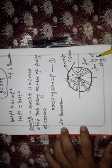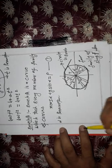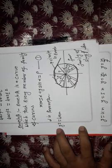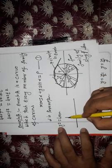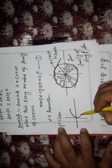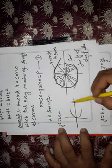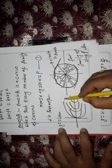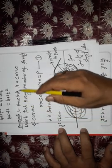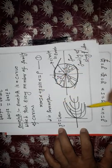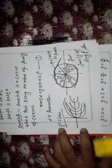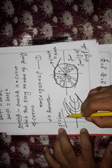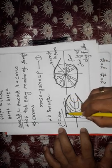This circle is the envelope for the family of straight lines. Another example: y² = 4ax is the equation of a parabola. For different values of a, we get a family of parabolas. A curve which touches every member of this family of curves is called the envelope. This line is the envelope in this case.